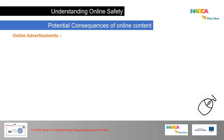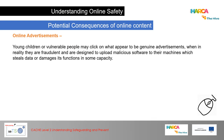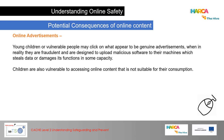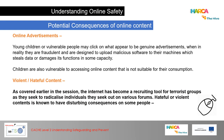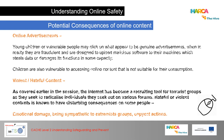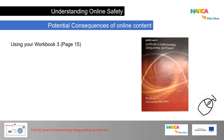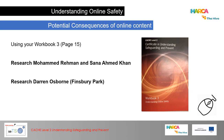Online advertisements — young children or vulnerable people may click on what appear to be genuine advertisements when in reality they are fraudulent, designed to upload malicious software that steals data or damages the machine's functions. Children are also vulnerable to accessing online content not suitable for them. Violent and hateful content — the internet has become a recruiting tool for terrorist groups seeking to radicalise individuals on various forums. Hateful or violent content is known to cause emotional damage, sympathy toward extremist groups and copycat actions. Using your workbook 3 on page 15, research Mohamed Emwazi and Sana Ahmed Khan, and research Darren Osborne at Finsbury Park.